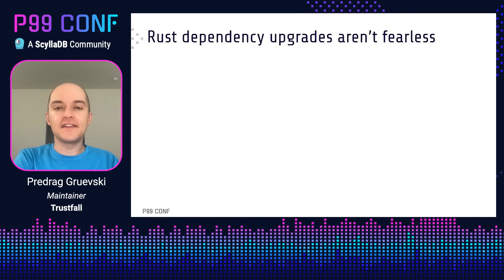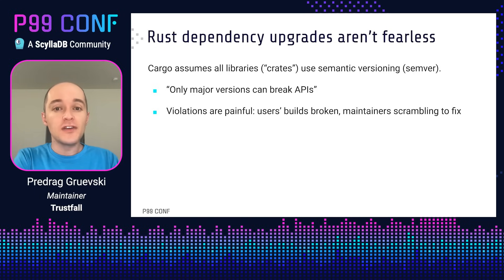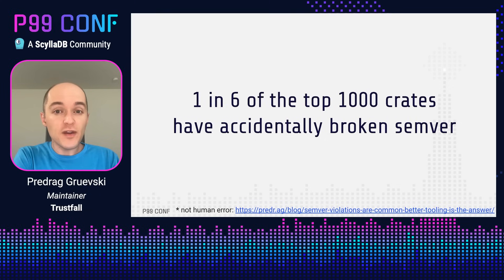The problem we're solving today is that dependency upgrades aren't fearless yet. Rust's package manager Cargo assumes that all libraries always adhere to semantic versioning. When this assumption is violated, the consequences can be painful — users' builds are broken and maintainers have to scramble to publish fixes. Fortunately, this works well most of the time. However, more than 1 in 6 of the top 1000 Rust crates have violated semver at least once.